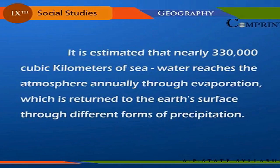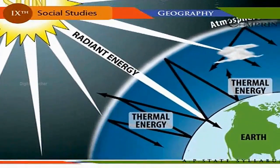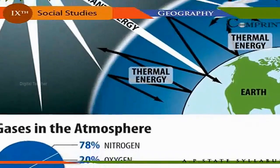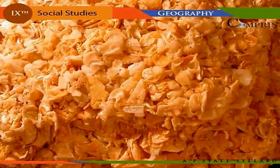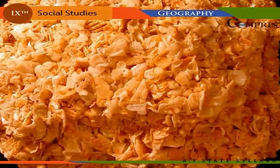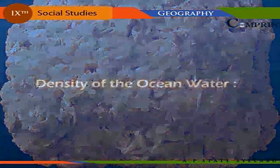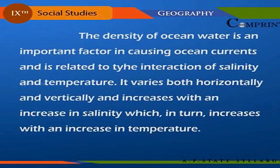The evaporated seawater is returned to the Earth's surface through different forms of precipitation. Also present in seawater are dissolved gases from the atmosphere, including nitrogen, oxygen, and carbon dioxide. Calcium, silicon, and phosphate dissolved in the seawater are used by marine creatures to form shells and skeletons.